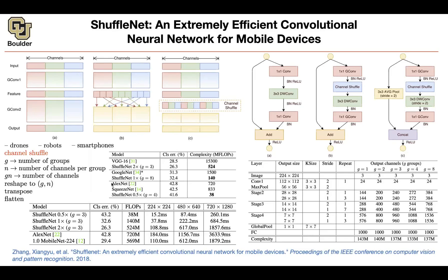Student: The shuffle isn't something that's learned — it's the same every time, right? Yes, nothing is learned here. It's just reshuffling — rearranging the furniture. You take a vector, turn it into a matrix, transpose the matrix, flatten it. It's the same order every time, nothing is random. Student: Have people tried more randomized or learned versions of the shuffle? I think if you put a dropout right after the shuffle output, that would randomize things, but I haven't seen a paper do it that way.